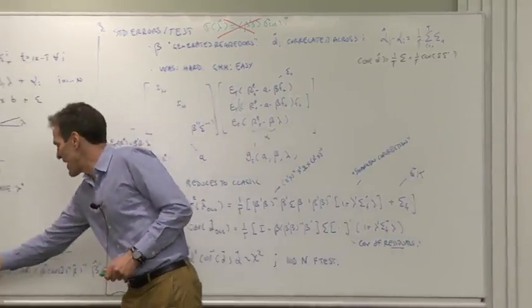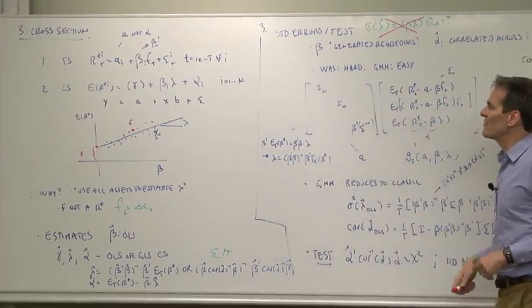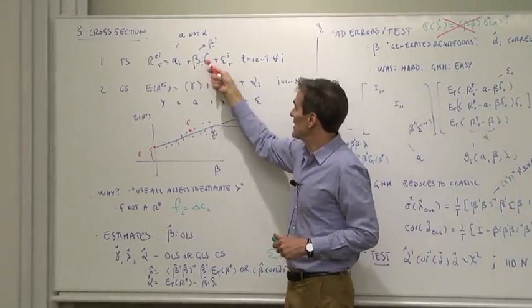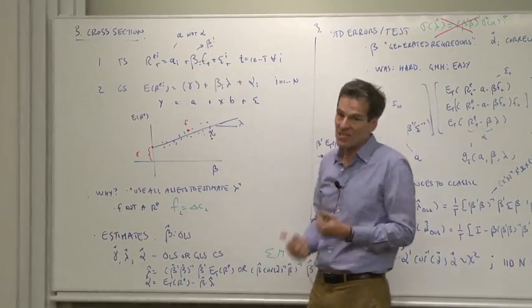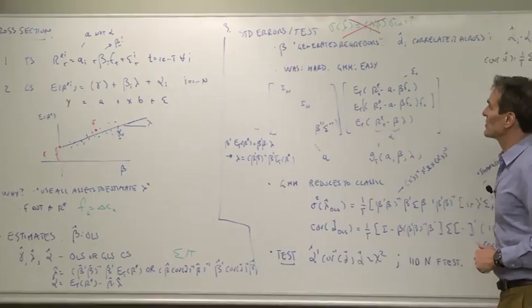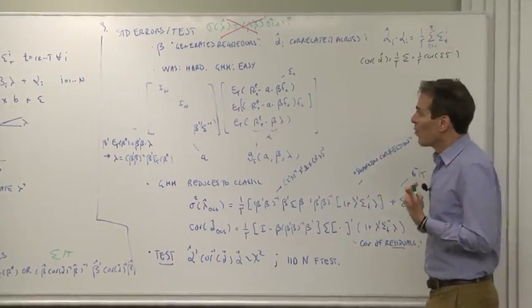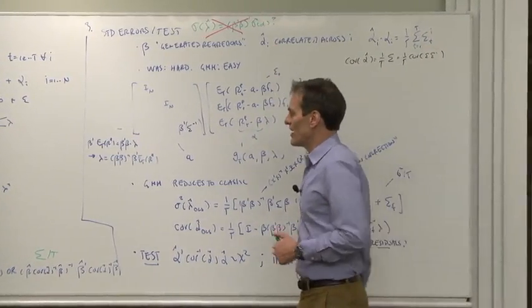First, these betas are not fixed. They are generated regressors in the same sample. So those things vary along with those things. We've got to take account of that in our sampling distribution. Worse, the alphas are correlated across assets.